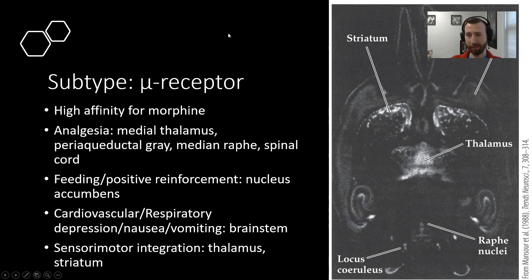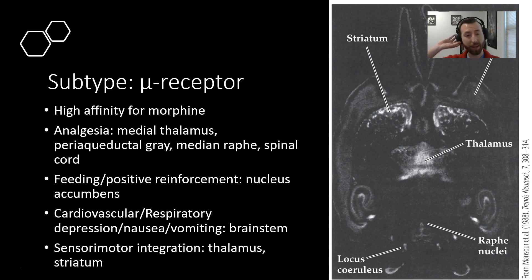This receptor, if you've heard of an opioid receptor, it's probably this one. It's got a high affinity for morphine. It is implicated in analgesia through its action in receptors in the medial thalamus, PAG, median raphe, and the spinal cord. It's implicated with regulating feeding behavior and positive reinforcement through its expression in the nucleus accumbens. We also see effects on cardiovascular, respiratory, nausea and vomiting through various areas in the brainstem, and sensory integration in the thalamus and striatum.